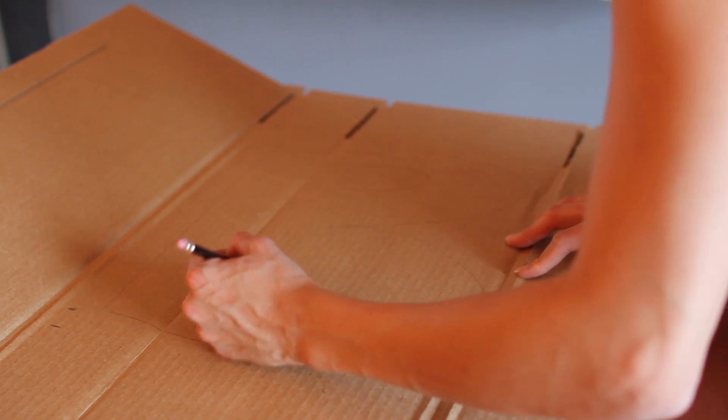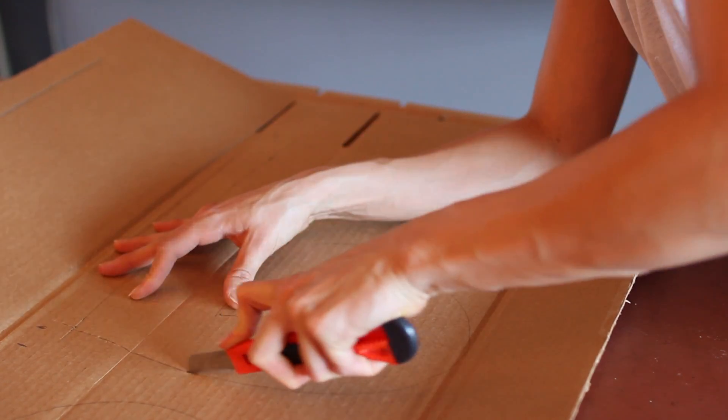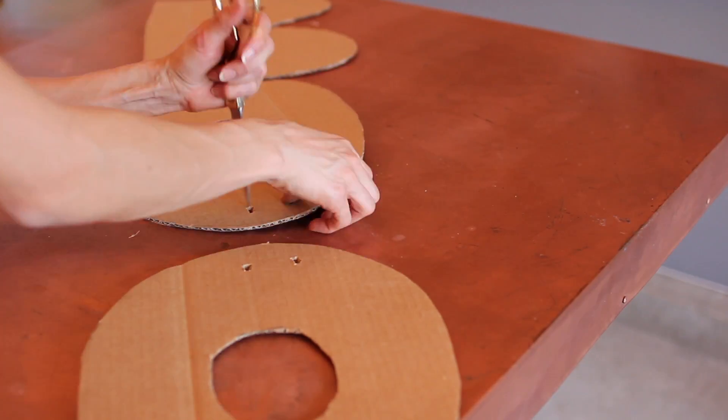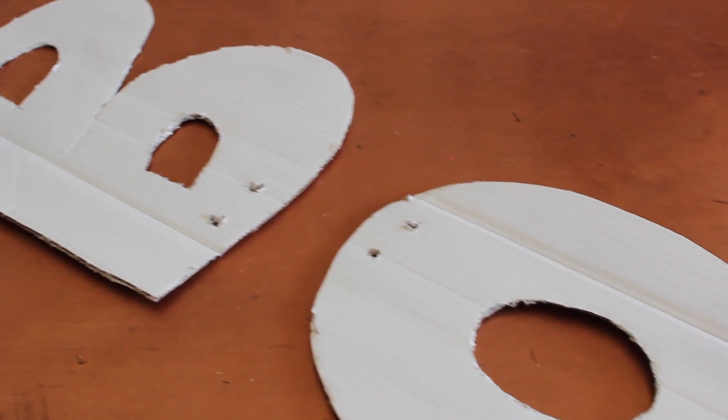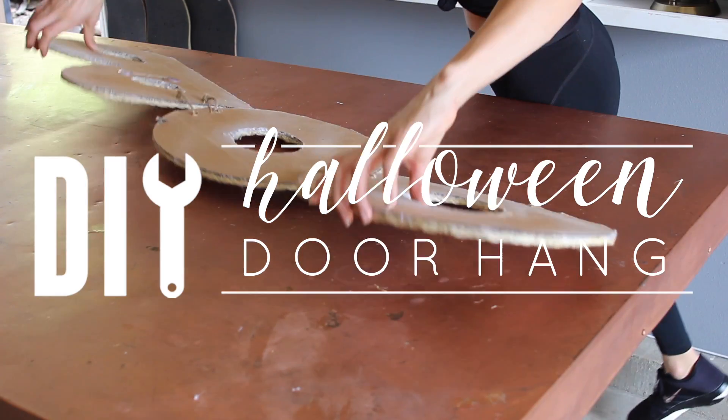Today I'm going to show you how I tied my front door area together after that mess of a DIY pumpkin tree with this boo door hang that is typically made of wood, but I decided to make it out of cardboard and for free.